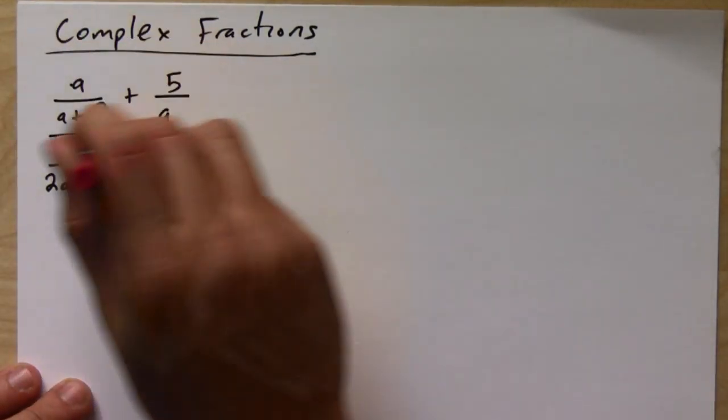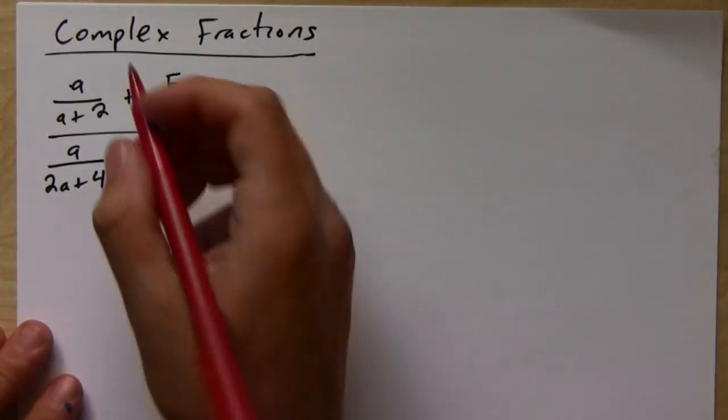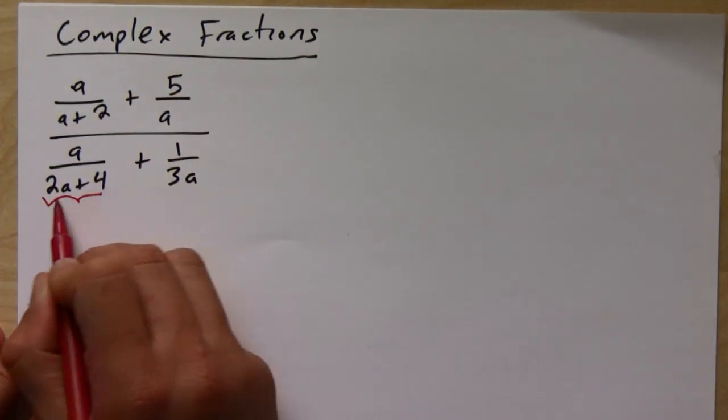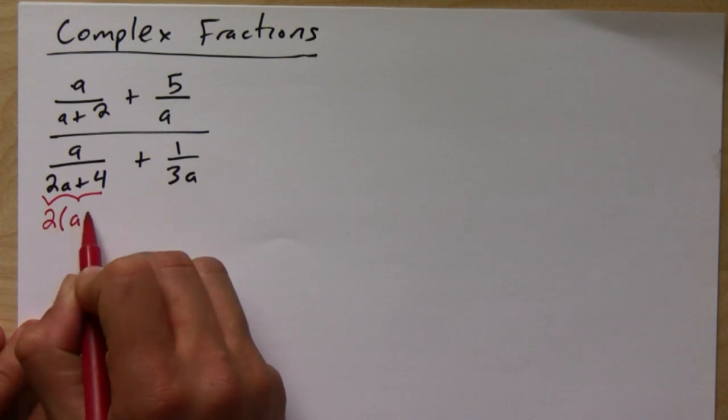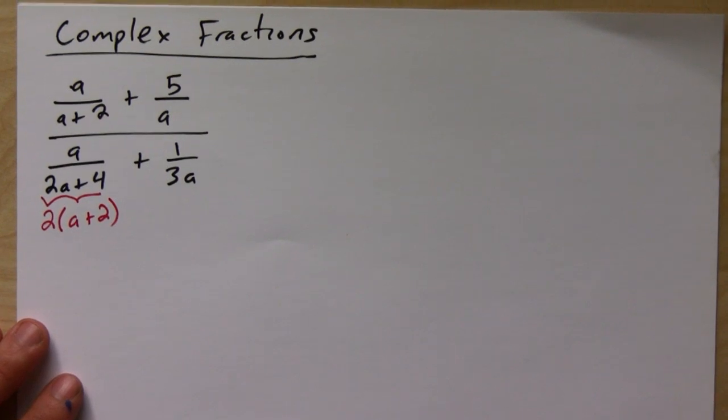So for this one, the bottom - notice this guy's factorable, so let's factor that first. And so then just like in the problem we just did, we're going to multiply each by what it needs.